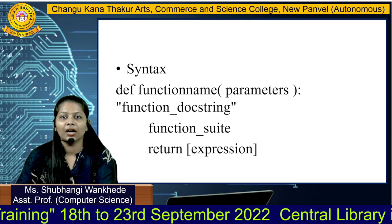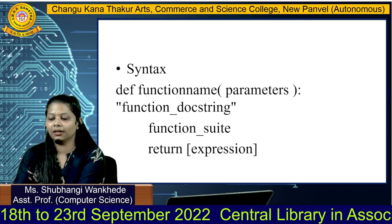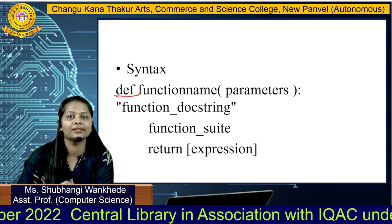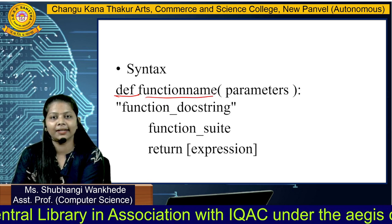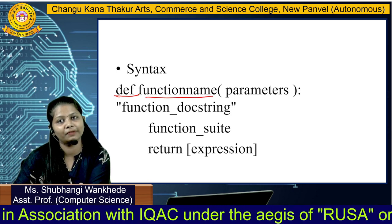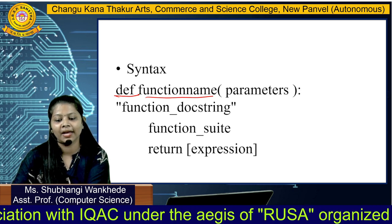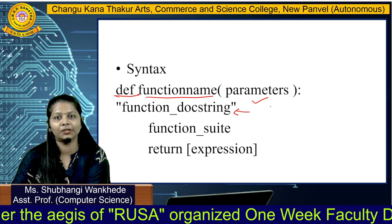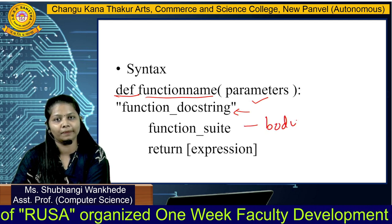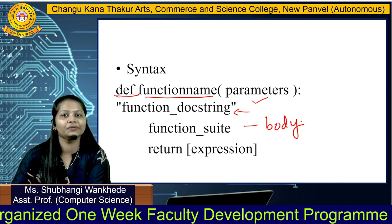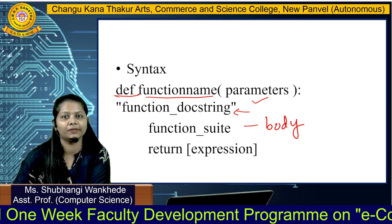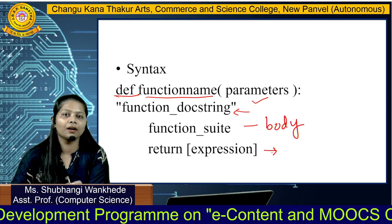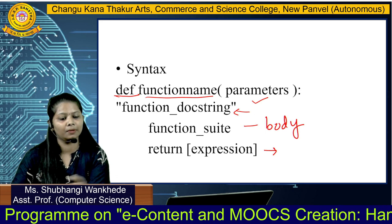Let's see the syntax of the function. In Python, the def keyword is used to tell Python that this is the function. Next is the function name — it can be any name, as it is a user-defined function. Parameters are added inside the parenthesis. The docstring is optional. The function suite is also called the function body, where we write the task to be performed. Return and expression is also optional — we can write only return or any expression to be returned by the function.